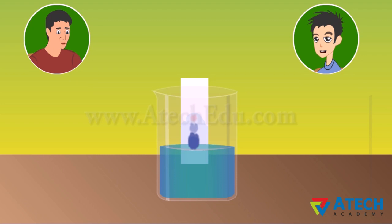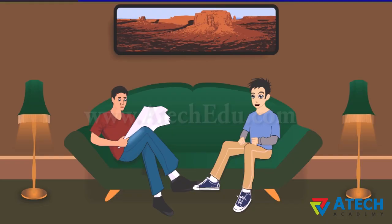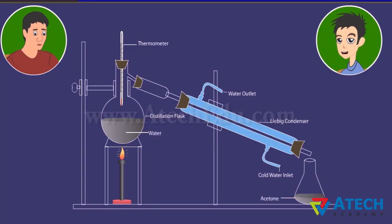A dye is a mixture of two or more colors. The colored component that is more soluble in water rises faster, and thus the colors get separated. This process of separation is called chromatography — 'chroma' in Greek means color. Chromatography is used to separate colors in a dye, pigments from natural colors, and drugs from blood. To separate a mixture of two miscible liquids like acetone and water, we use distillation. Heat the mixture slowly in a distillation flask; since acetone has a lower boiling point than water, it vaporizes, condenses in the condenser, and is collected from the condenser outlet.